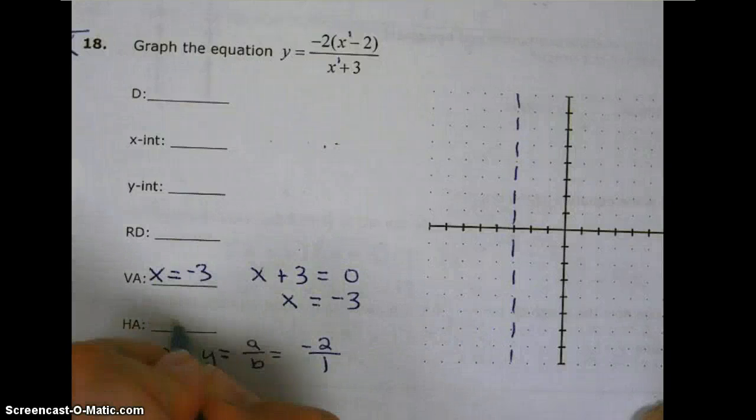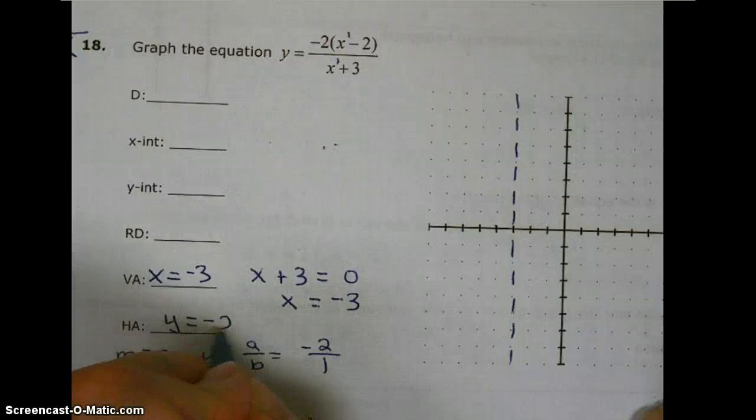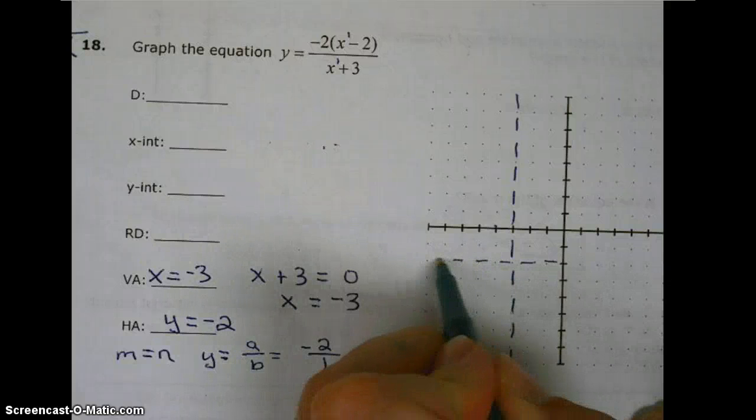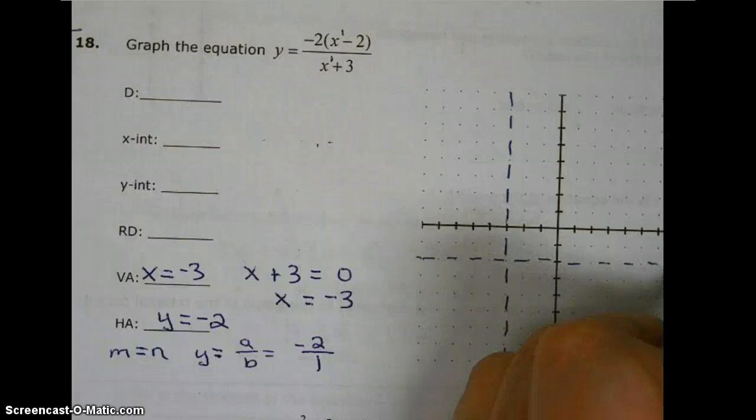So our horizontal asymptote is going to be y equals negative 2 divided by 1, which is negative 2. So at negative 2, we draw in our horizontal asymptote.